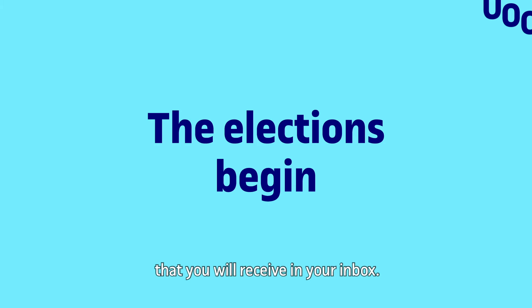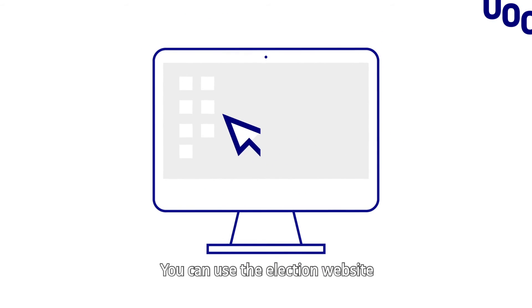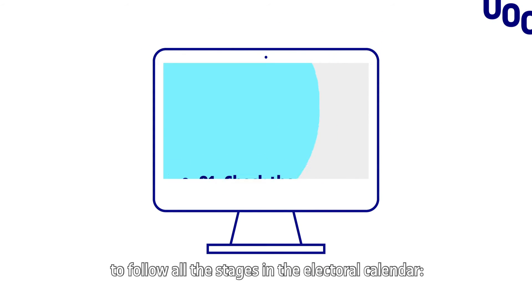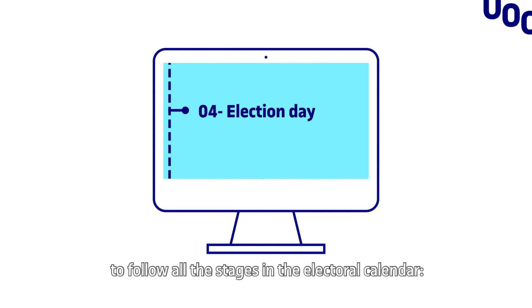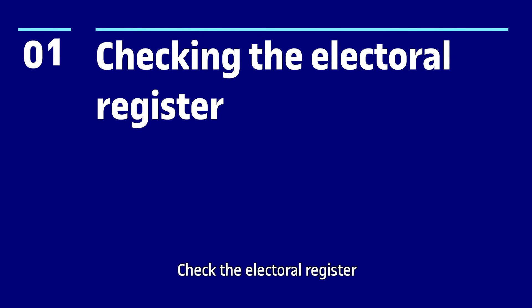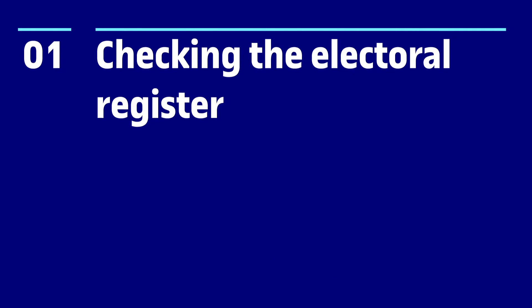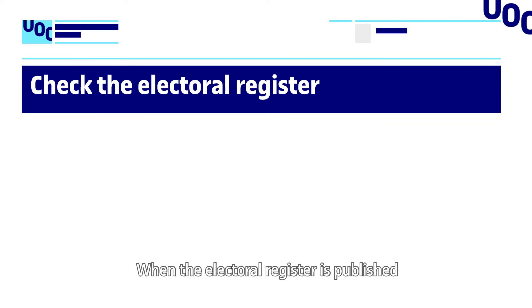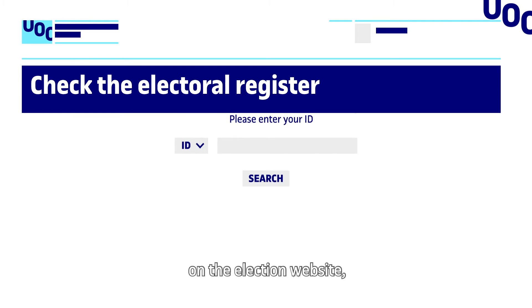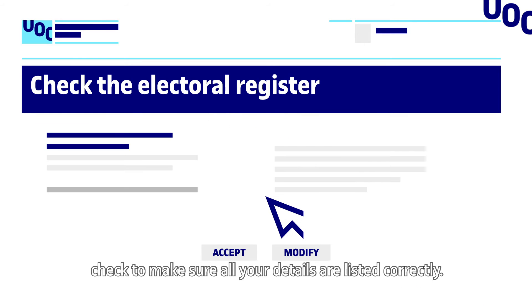The calling of the elections is communicated in a message from the UOC president that you will receive in your inbox. You can use the election website to follow all the stages in the electoral calendar.